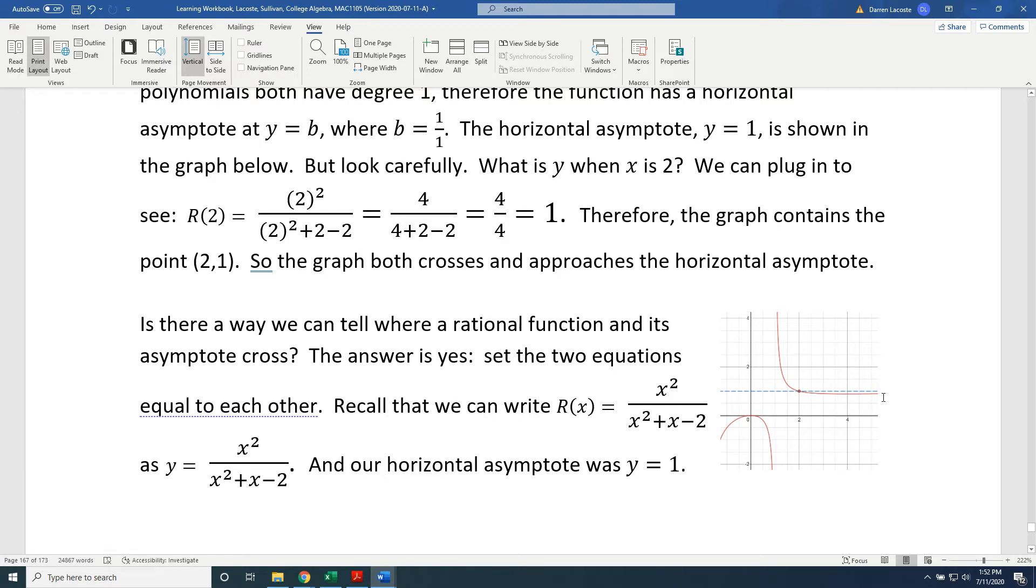Is there a way we can tell where a rational function and its asymptote will cross? The answer is yes. Set the two equations equal to each other. Recall that we can write R(x) = x² / (x² + x - 2) as y = x² / (x² + x - 2). And our horizontal asymptote was y = 1.